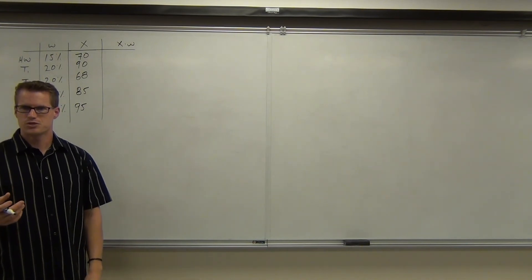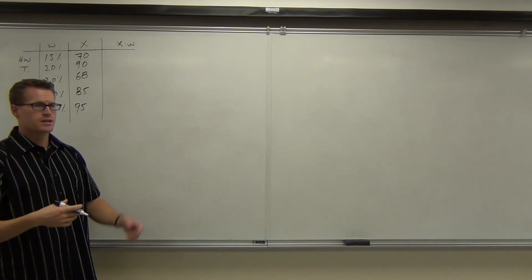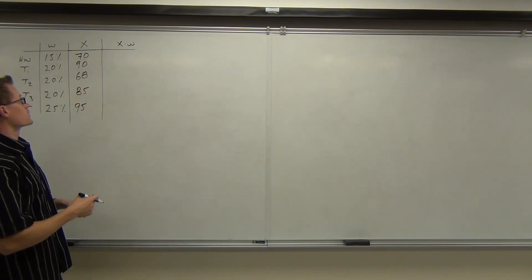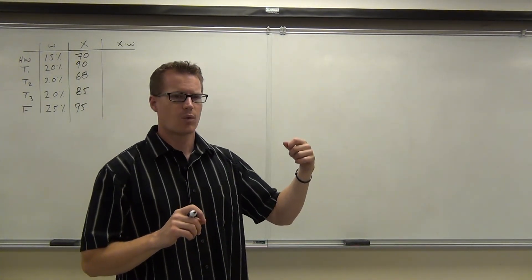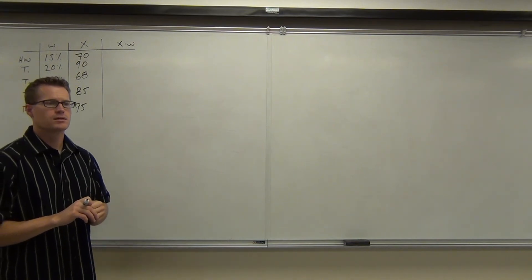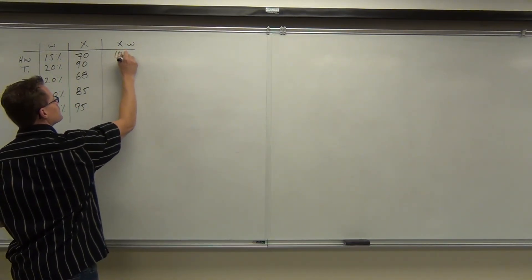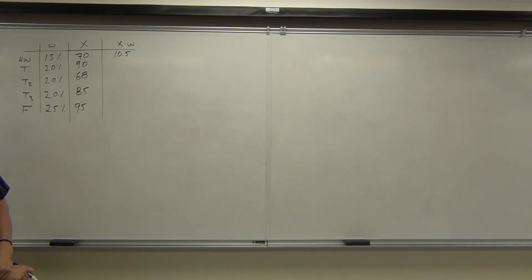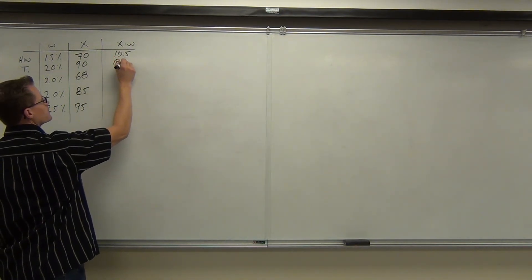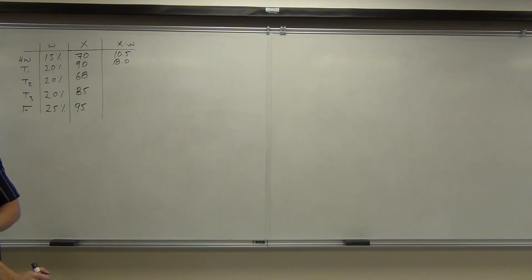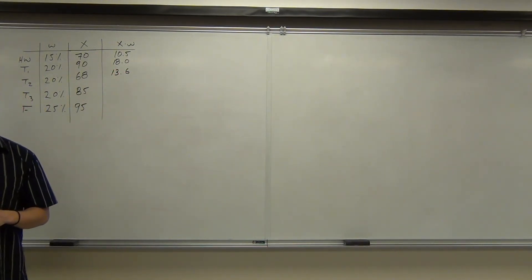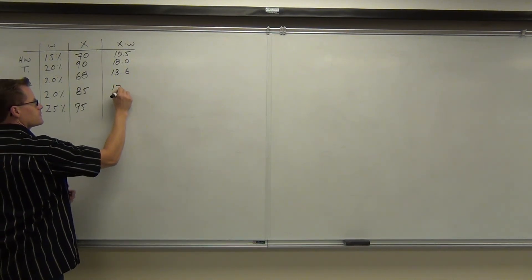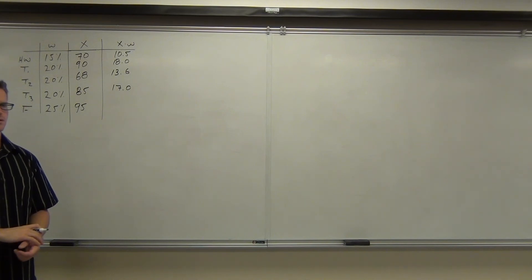what we're going to do is we're going to find out x times w for each region. Does this look familiar to the frequency distribution mean that we did last time? Really, really similar, only instead of a midpoint, now we're using the point value for your homework and for your tests, things like that. So can you tell me what is 15% of 70? Remember, translating 15% to a decimal, we're going to make that 0.15. What is 15% of 70? 10.5. 10.5, okay. How about 20% of 90? 18. Even? Oh, yeah, I guess it would be. I'll put 18.0 to keep it honest up there. 20% of 68, how much is that? 13.7. Perfect. 20% of 85? 17. All right. And 25% of 95? 23.75.